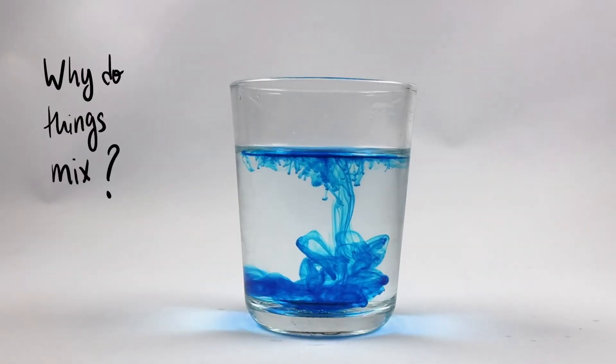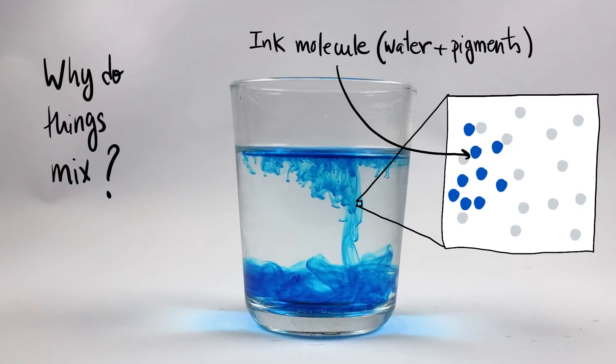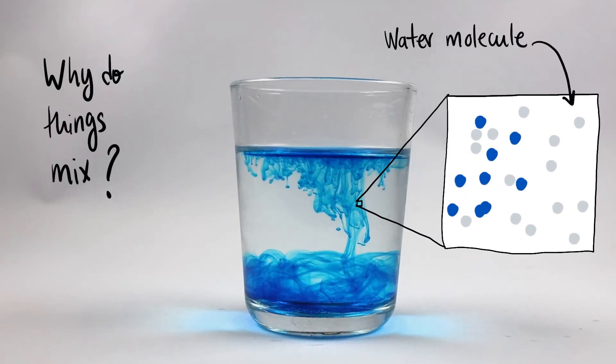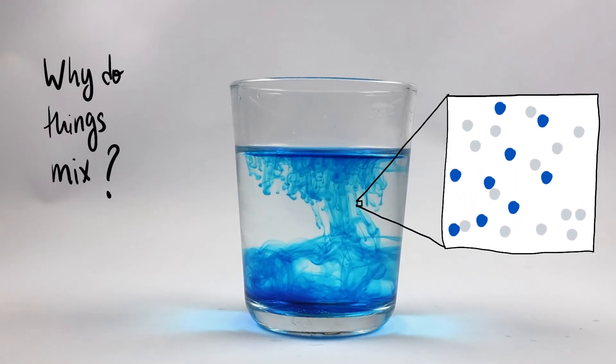First, we need to see why things mix. Molecules in the ink constantly jiggle around and bump with wiggly water molecules. This makes them move randomly and disperse throughout the glass.